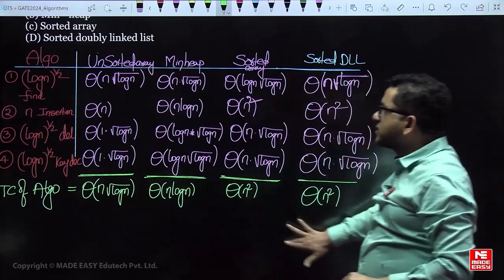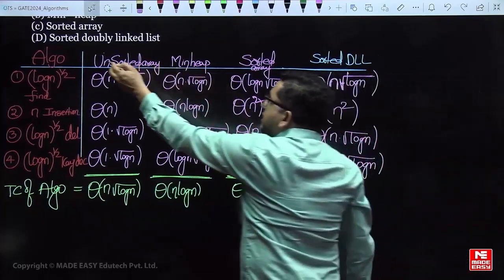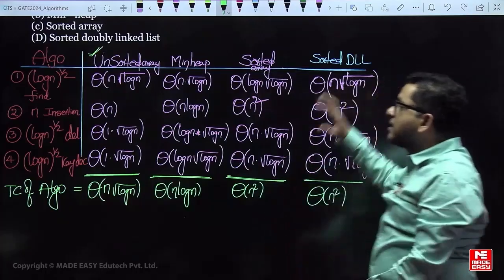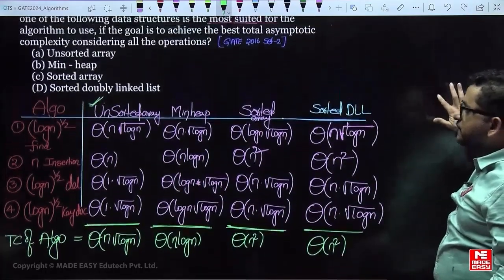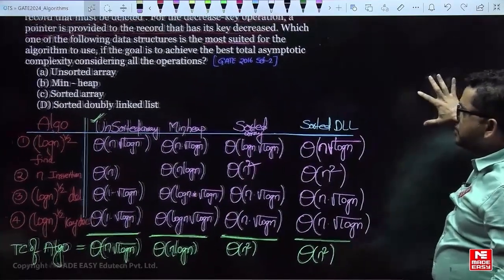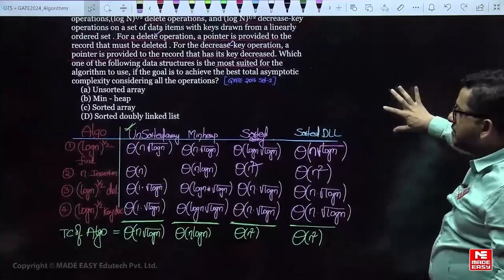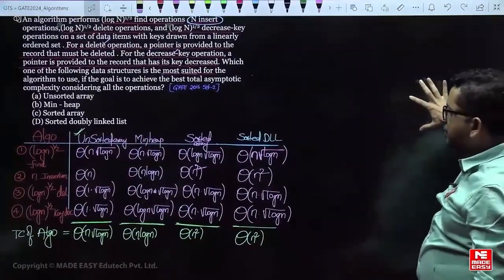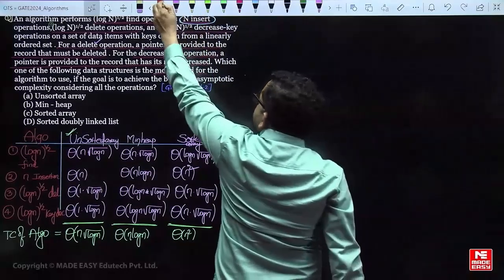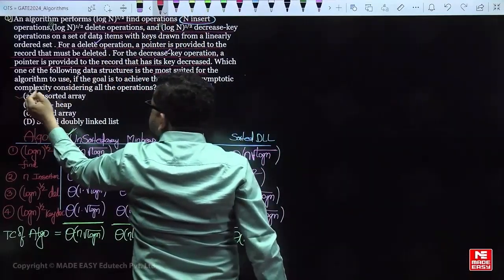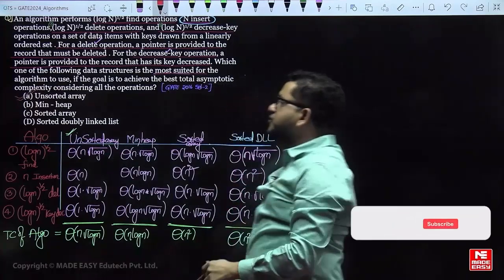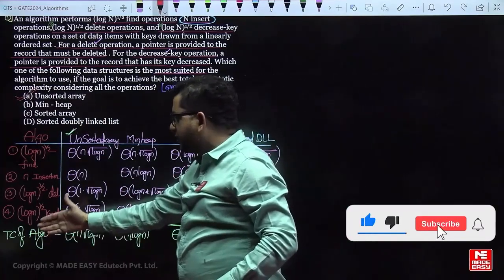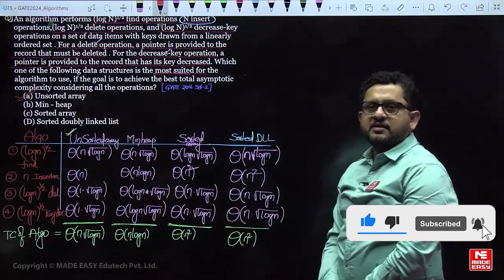Out of all possible data structures — unsorted array, min heap, sorted array, sorted doubly linked list — the unsorted array gives the least time complexity of Θ(n·√(log n)) for the given algorithm. So the answer is option A: unsorted array, which reduces the time complexity of the algorithm.